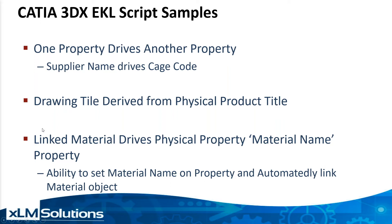And then finally, having linked materials automatically having the material name show up as a property on the physical product. Many customers want to search for the data based on that material name, and by adding a material to a physical product, the name can automatically show up as a property. In addition, the reverse can be done — by setting the name on a material property within the physical product, it can automatically find and link the material to the CAD object.